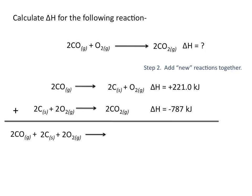In my new combined equation, I have 2 CO plus 2 C plus 2 O2 gives me 2 C plus O2 plus 2 CO2. And because I added the reactions together, I'm going to add the delta H values together.